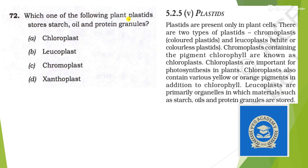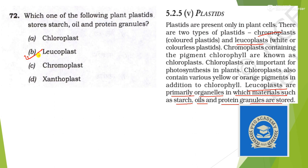Next: which one of the following plant plastids stores starch, oil, and protein granules? Plastids contain different colored or colorless pigments. Colored pigments are known as chromoplasts, and colorless pigments are known as leucoplasts. Leucoplasts are primarily organelles in which materials such as starch, oils, and protein granules are stored. So the answer should be option B — leucoplasts.